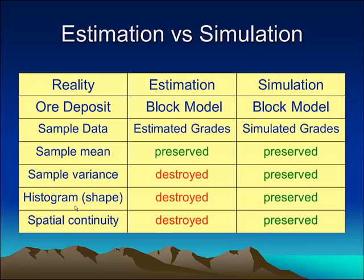Why is the histogram so important? If we think about grade tonnage curves as being values above cutoff, then the shape of the histogram is very important. If the shape is not preserved or reproduced, then the corresponding grade tonnage curves will also be out of whack — they'll be biased. Finally, let's look at spatial continuity. The variogram computed from estimated values is not the same as that of the real samples — we have destroyed our model of spatial continuity with estimation. However, simulated values do reproduce the spatial continuity or variogram seen in our sample values. So simulation is a much better method for preserving all of these statistics than estimation.